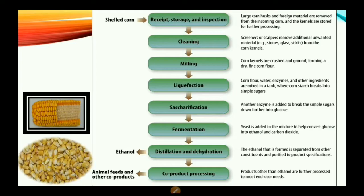After cleaning comes milling, where corn kernels are crushed and ground forming a dry fine corn flour. Then liquefaction: corn flour, water, enzymes, and other ingredients are mixed in a tank where corn starch breaks into simple sugars. Next is saccharification, where another enzyme is added to break the simple sugars further into glucose. Finally, fermentation: yeast is added to the mixture to convert glucose into ethanol and carbon dioxide, producing ethanol.